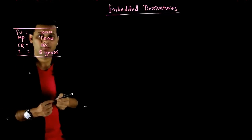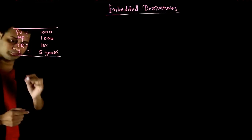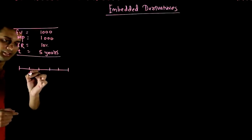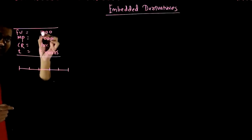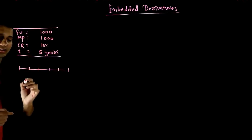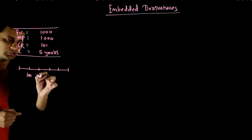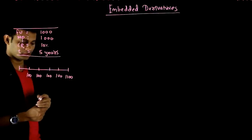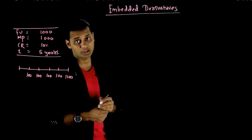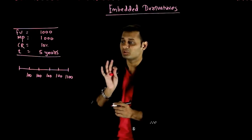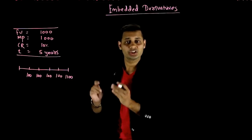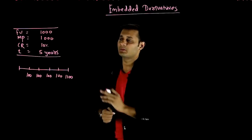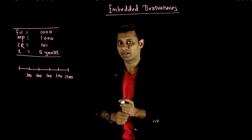What will happen to you? Let me talk about cash flows. For year 1, 2, 3, 4, 5 — the face value is 1000 and the coupon rate is 10%, so you will get 100 rupees each year. In year 5, you get 100 rupees plus 1000 rupees face value, totaling 1100. This is called investing in a fixed rate bond, where your coupon rate stays the same — fixed.